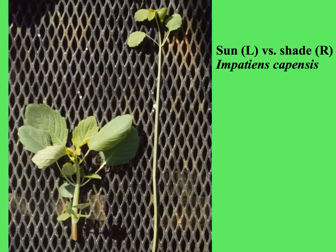Here's the touch-me-not, Impatiens capensis: the plant on the left grown in the sun has shorter plants and, in this case, bigger leaves. The plant grown in the shade is very long and skinny with small leaves, searching for the sun.